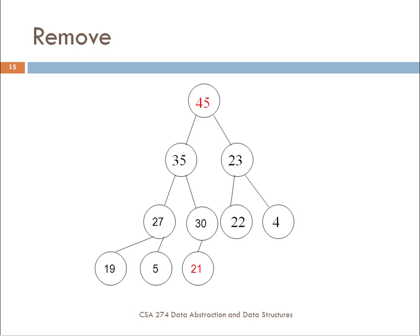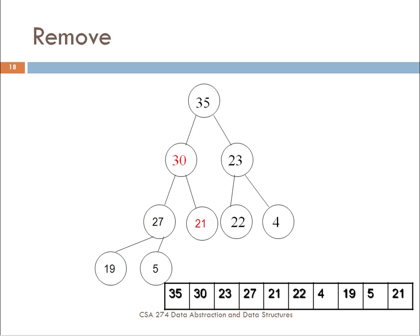Here is an example. Let's say we're going to remove element 45 from this tree. We initially copy 45 to whatever we're going to return, then take the last element in the tree and copy it up to the root. Then we check whether this new root element is greater than its children; if not, we swap it with its greatest child. In this case, 21 will be swapped with 35, then we iterate again — 21 is less than its two children, so we swap it with the greater of the two, which is 30. We end up with the heap shown here as a tree as well as the array representation.